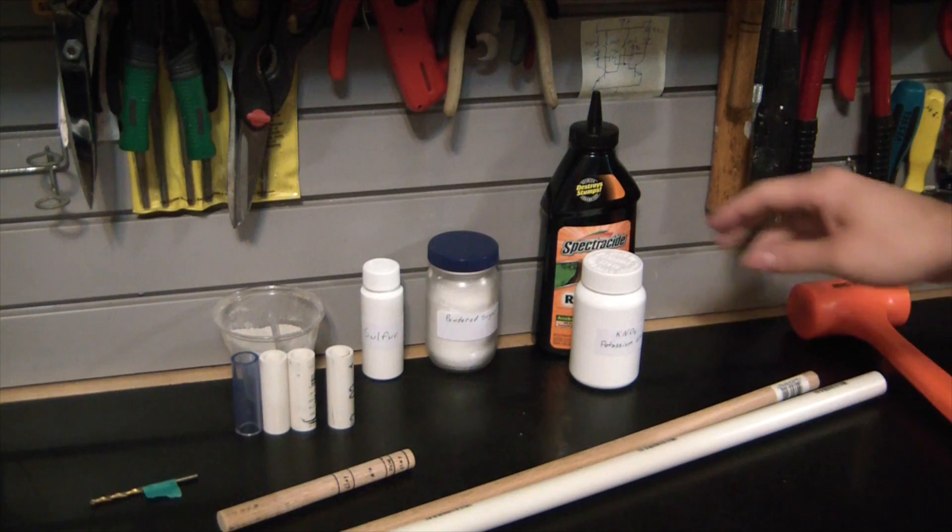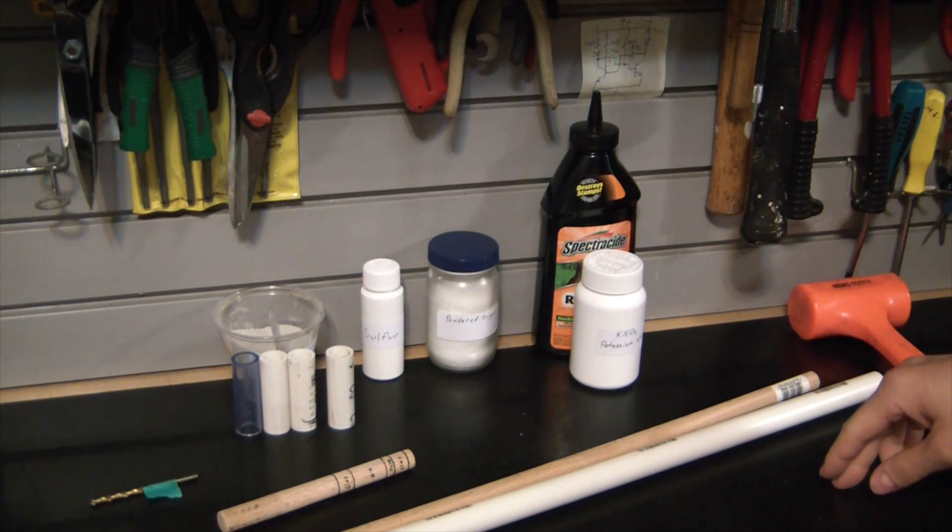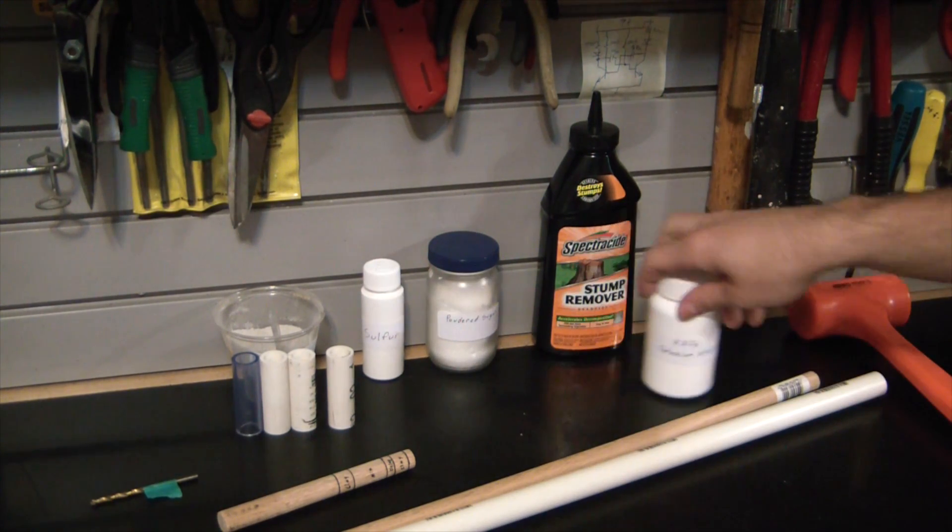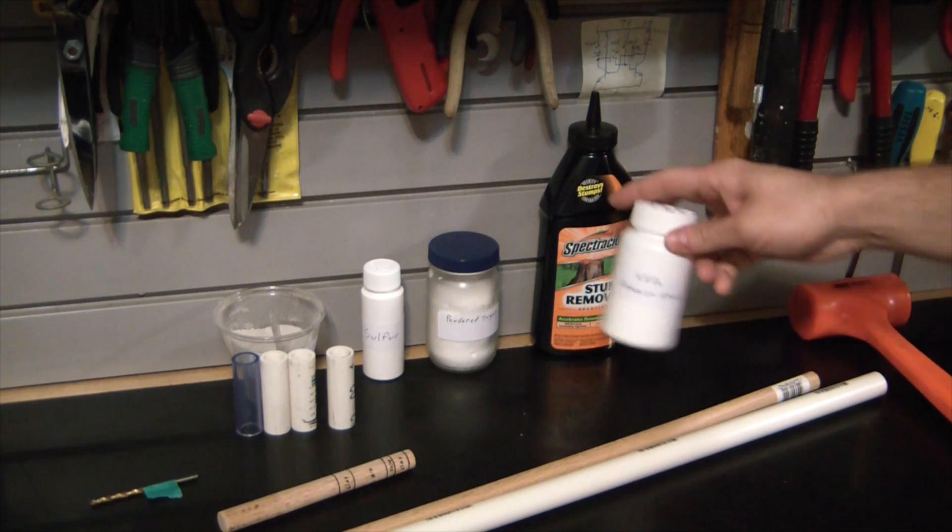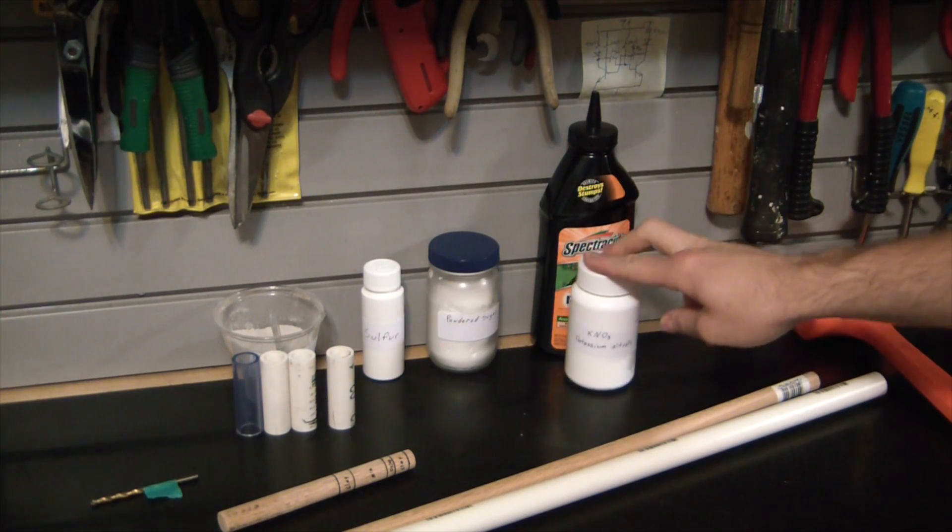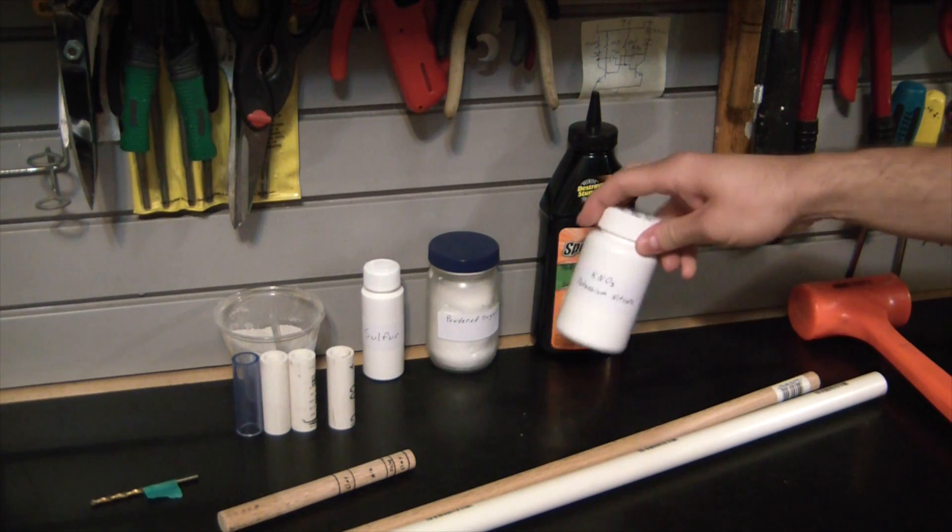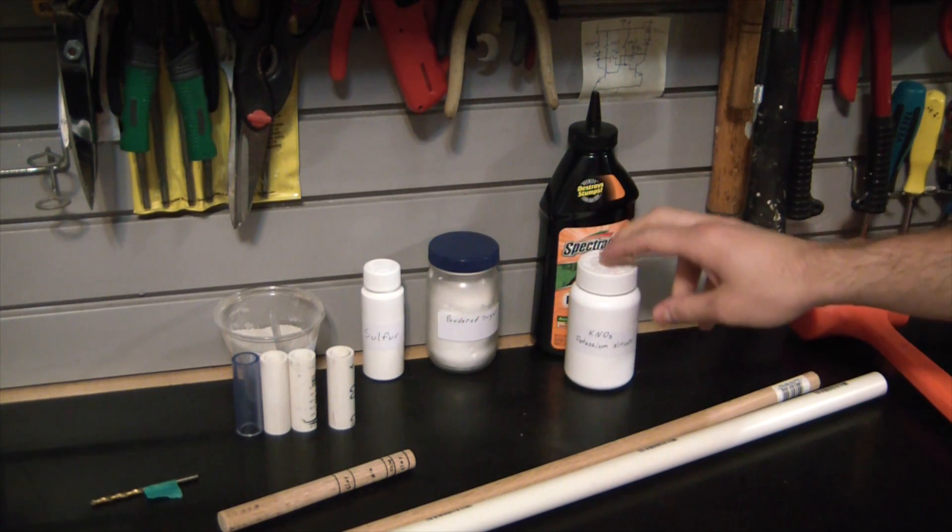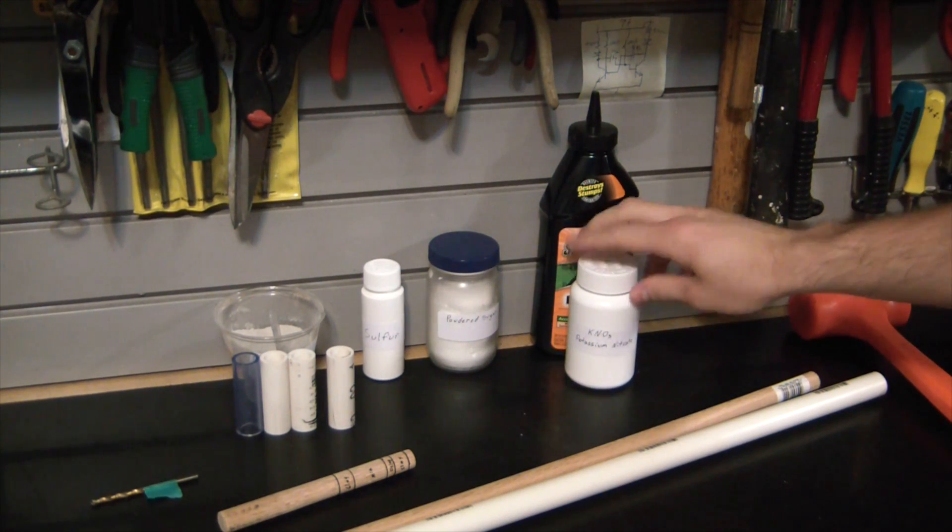The first step in building your rocket engines is gathering your supplies for the rocket fuel. Here I have Spectracide stump remover, potassium nitrate. I have a bottle of stuff that I already ran through the blender to make it really finely powdered, like the consistency of powdered sugar is what you're looking for.